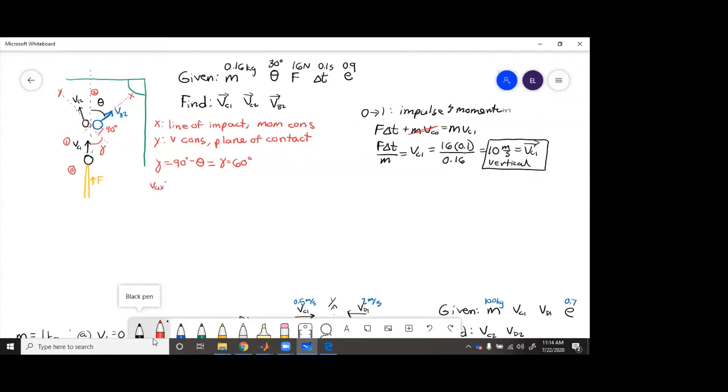So, vc1x, vc1x goes in that direction. It's this component, which is the sine, vc1 sine gamma. So that is going to be 10 sine of 60 degrees.